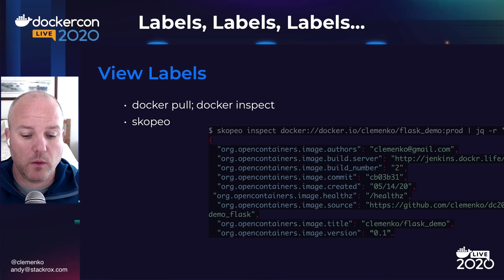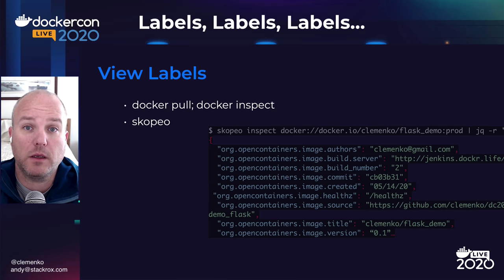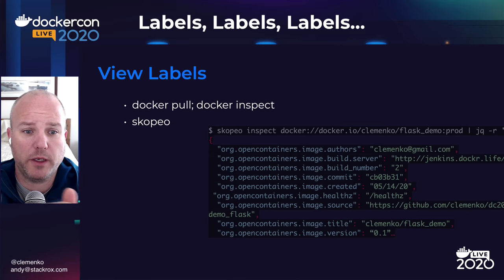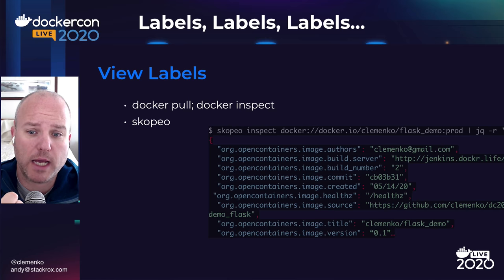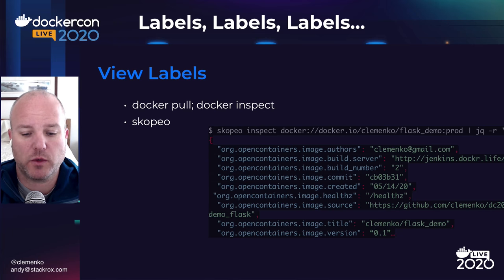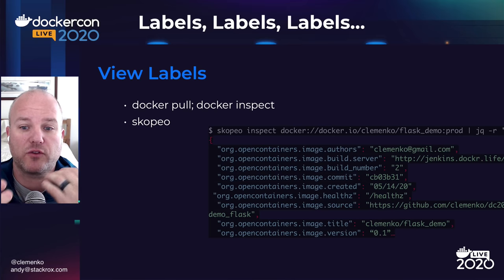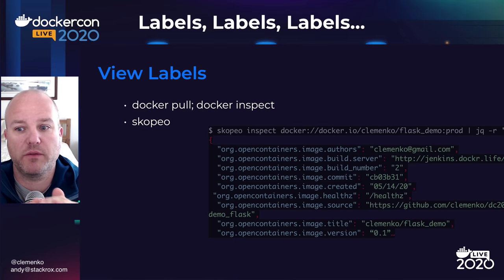How do we view labels? There are two major ways. The first is a Docker pull and Docker inspect — you can pull the image locally, inspect it, and since it outputs as JSON, use something like JQ to crack it open and look at the individual labels. Another one I found recently is Skopeo from Red Hat. This allows you to actually query the registry server, so you don't even have to pull the image initially. This could be really useful if you're on a small development workstation talking to a Kubernetes cluster.